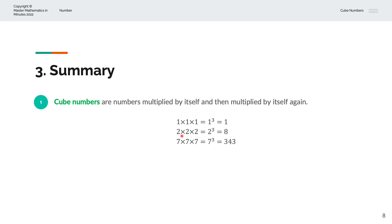Secondly, we have the number 2, multiplied by itself, which is 2, and then multiplied by itself again, which is 2. That is 2 cubed, and that equals 8.